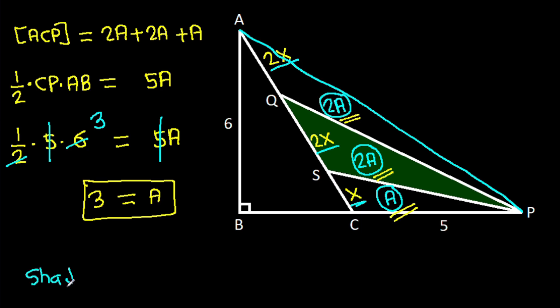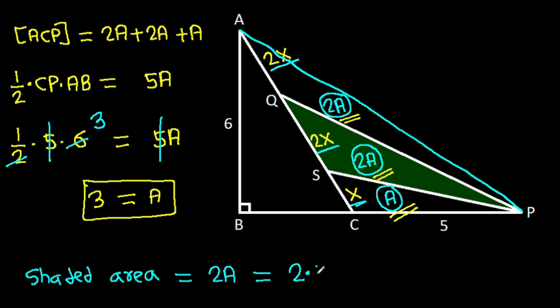The shaded area is 2A, which equals 2 times 3, and it is 6.